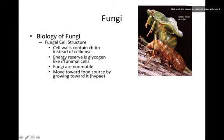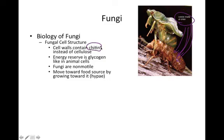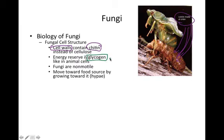Another thing connecting fungi to animals evolutionarily is chitin — the exoskeleton polymer of glucose that insects and arthropods have — which is also found in the cell walls of all fungi. Additionally, fungi and animals store excess glucose the same way: as glycogen. Recall that plants store excess glucose as starch, whereas animals and fungi both store it as glycogen. Even though fungi are non-motile, they quote-unquote move toward their food source through the growth of hyphae.